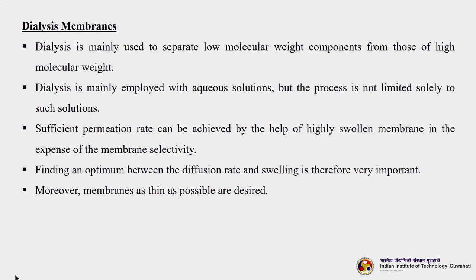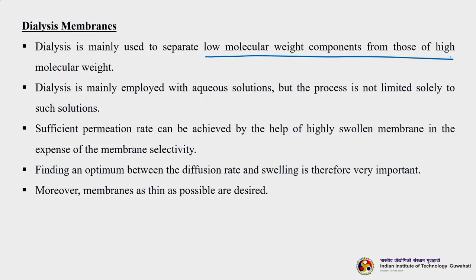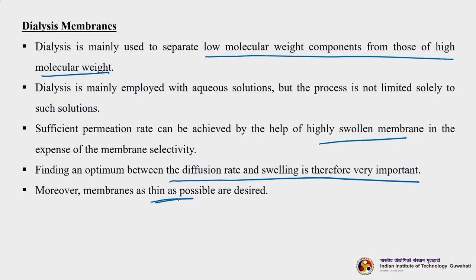Dialysis membranes are very different from membranes used in ultrafiltration, microfiltration, or reverse osmosis. Dialysis is mainly used to separate low molecular weight components from high molecular weight components, and is mainly employed with aqueous solutions. Sufficient permeation rate can be achieved through highly swollen membranes at the expense of selectivity — if the membrane swells, selectivity decreases but the diffusion rate of solutes increases. Finding an optimum between diffusion rate and swelling is therefore very important, and membranes as thin as possible are desired.